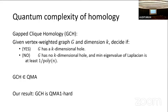We can refine the question a little bit and define this gap clique homology problem. In the yes case, there is a k-dimensional hole. In the no case, there's no hole and there's not even something close to a hole — we formalize this by saying the Laplacian doesn't have any exponentially small eigenvalues; all eigenvalues are at least one over polynomial in the size of the graph.